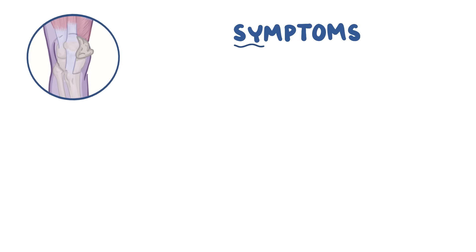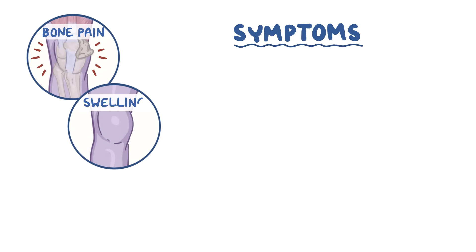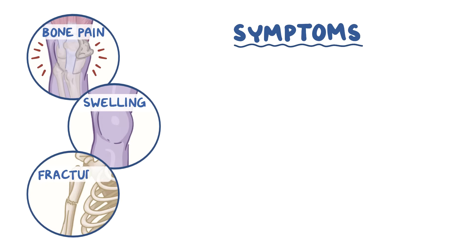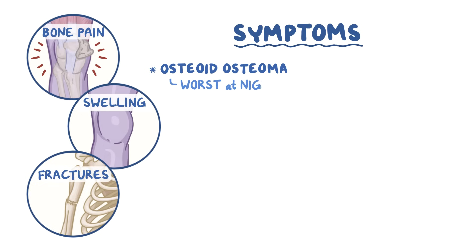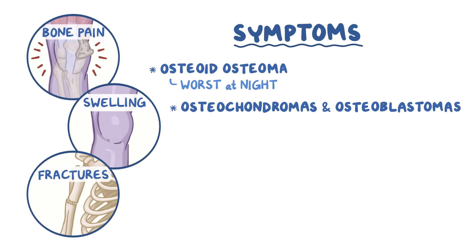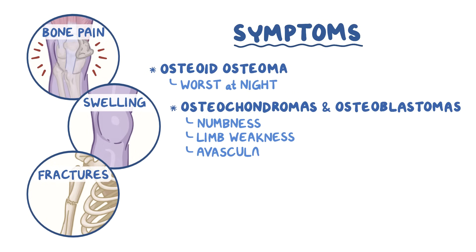Bone tumors commonly cause bone pain, swelling, and fractures. Some unique symptoms are that the pain of osteoid osteoma typically gets worse at night, while osteochondromas and osteoblastomas sometimes press against spinal nerves, causing numbness and limb weakness. They can also cause avascular necrosis of certain regions within the bone if the tumor impinges on a major blood vessel.